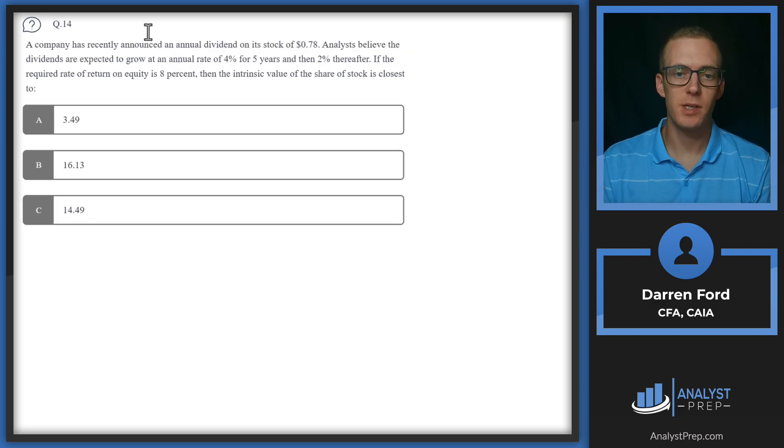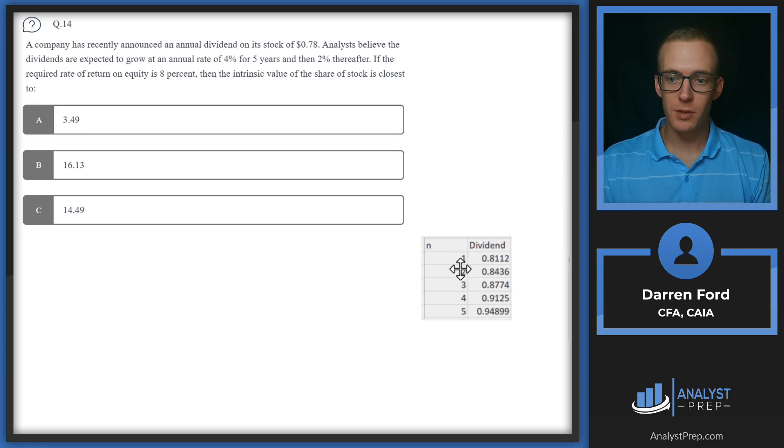Question 14. A company has recently announced an annual dividend on its stock of 0.78. Analysts believe the dividends are expected to grow at an annual rate of 4% for five years and then 2% thereafter. If the required rate of return on equity is 8%, then the intrinsic value of the share of stock is closest to. We can solve this problem using our cash flows function on the calculator, since we're getting a stream of dividends. We're going to be discounting all these annual dividends back to the present value, along with the terminal value of the stock in period five, once the growth rate levels off to 2%.